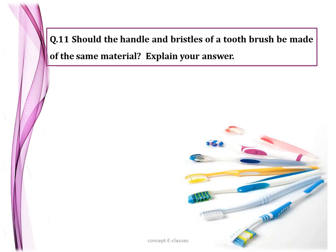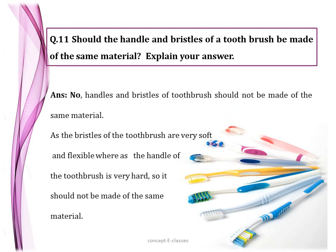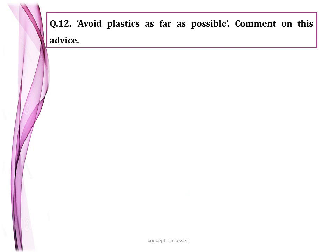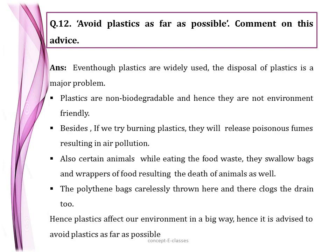Question number eleven: should the handle and bristles of a toothbrush be made of the same material? No — the handles and bristles of a toothbrush should not be made of the same material. The bristles are very soft and flexible, whereas the handle is very hard. If the bristles were hard, they would affect our teeth and gums when brushing. If the handle were soft and flexible, we could not get a proper grip.